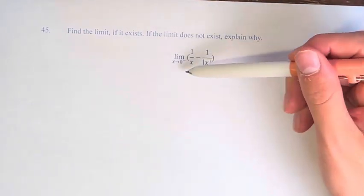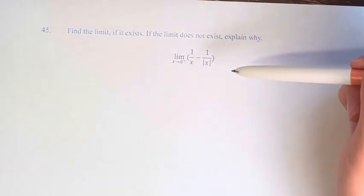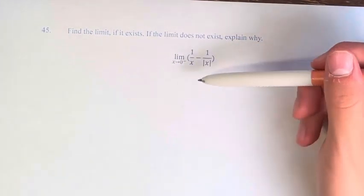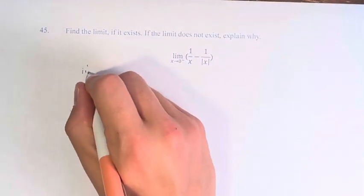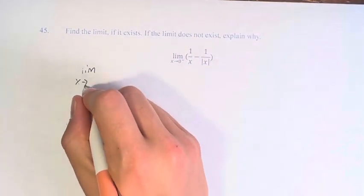What we want to be able to do is to simplify this, because if we just plug in 0 now, then we're going to be dividing by 0. So we're going to do some limit laws to simplify this, but before we do that, we have to get rid of the absolute value.